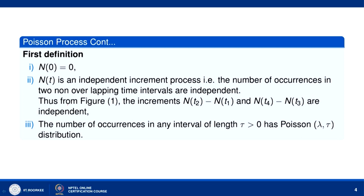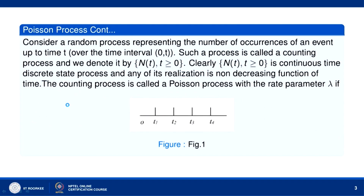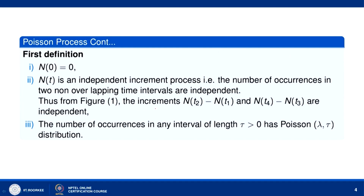From Figure 1 we can see that times are indicated: t = 0, t = t1, t = t2, t = t3, and t = t4. So in the time interval t1 to t2, the increment N(t2) − N(t1), and in the time interval t3 to t4, the increment N(t4) − N(t3) are independent. In two non-overlapping intervals, the number of occurrences are independent.